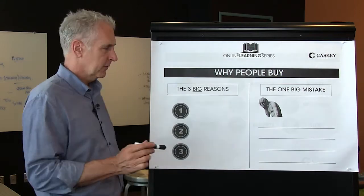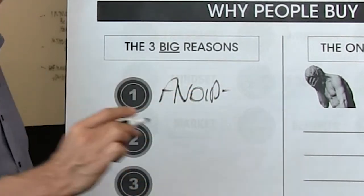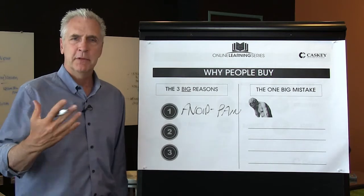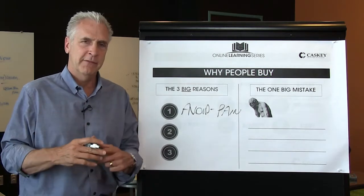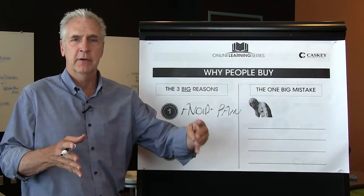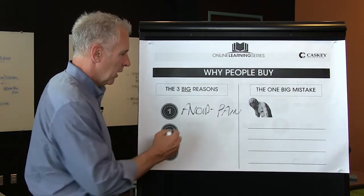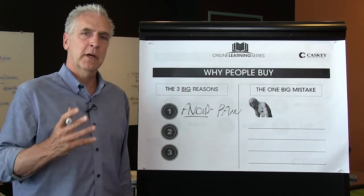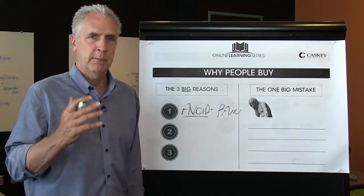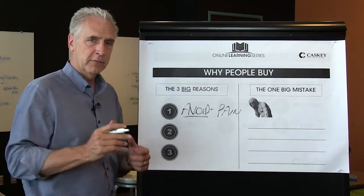Let's talk about these three reasons. Number one is people buy to avoid — and what are they avoiding? They're avoiding pain. They're avoiding a problem that's coming up in the future in their life. It's the way a lot of insurance policies are sold — you want to buy today to avoid the future pain of when something happens to you and your family is left broke. So avoiding a pain is a real critical part of your sales process. You should understand what kinds of pains, problems, scenarios, and circumstances your prospect is trying to avoid by buying from you.